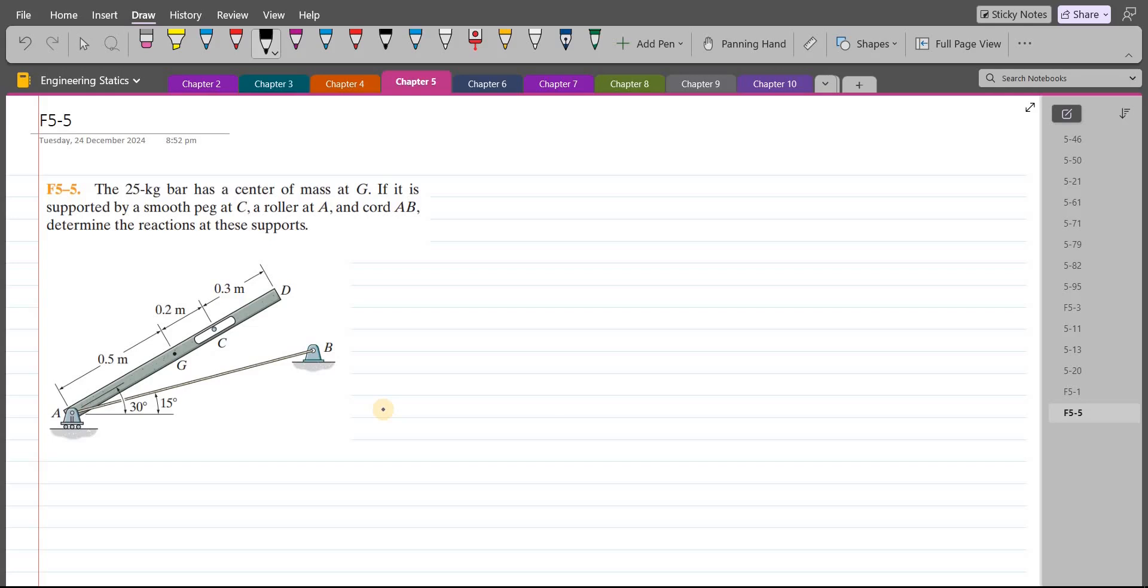Welcome back to the solutions manual. In this video, we will solve problem F5-5 from R.C. Hibbeler Engineering Statics 15th edition. According to this problem, the 25 kg bar has a center of mass at G. If it is supported by a smooth peg at C, a roller at A, and chord AB, we have to determine the reactions at these supports.